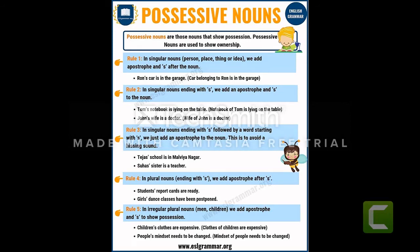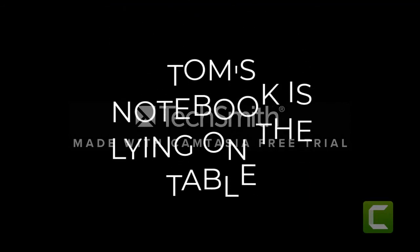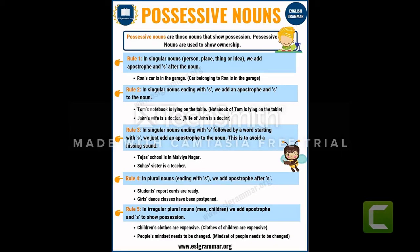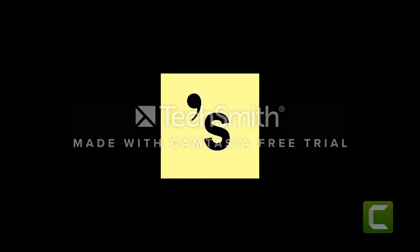Ron's car is in the garage. See the next example: 'Whose notebook is lying on the table?' Tom's notebook is lying on the table. In the same way, after Tom we add an apostrophe and S to denote possession. Next, you see John's wife — J-O-H-N apostrophe S. John is a noun, and to denote possession we add an apostrophe and S.